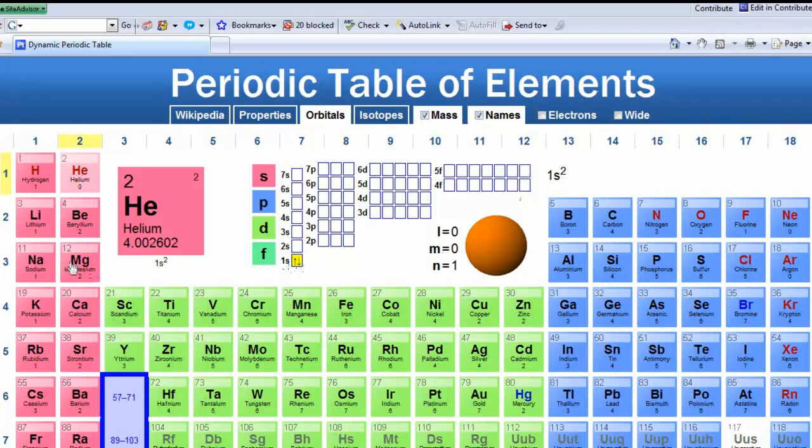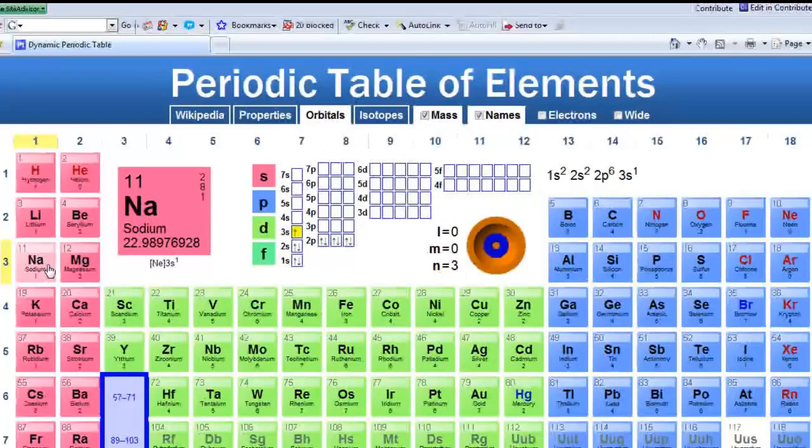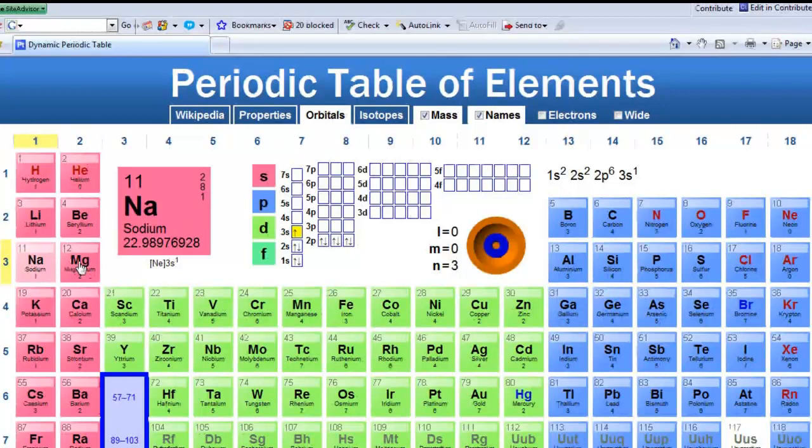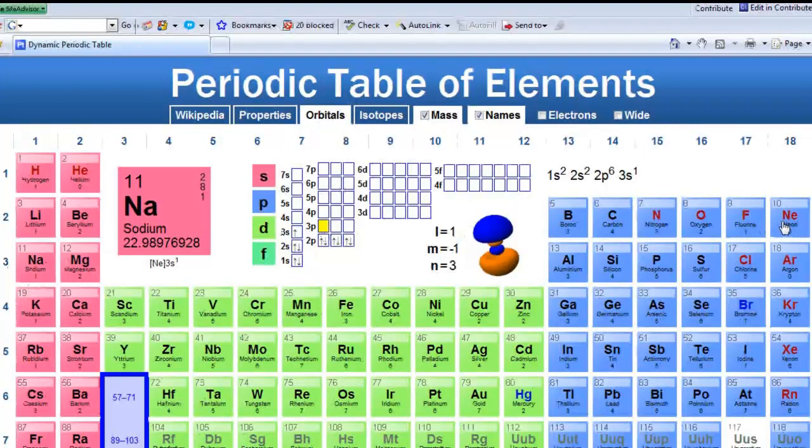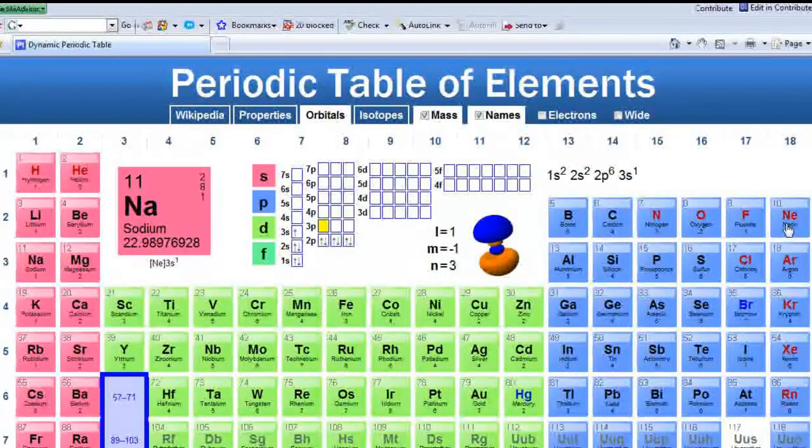So predict what would happen for sodium if sodium formed an ion. Predict if it would be positive or negative and what would the charge be. Think about if it moves forward in the horizontal direction. It has to go through magnesium, aluminum, silicon, phosphorus, sulfur, chlorine to get to argon. That's one noble gas. Seems kind of far away. There's sodium again. Walk backwards. If it goes backwards from 11 to 10, it hits neon. Well, that's real close. So the closest noble gas and horizontal movement for sodium is neon.